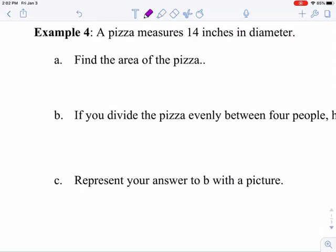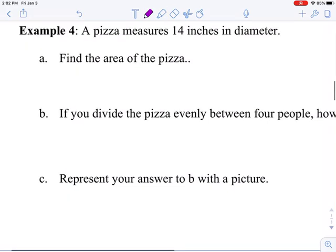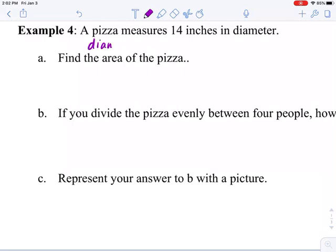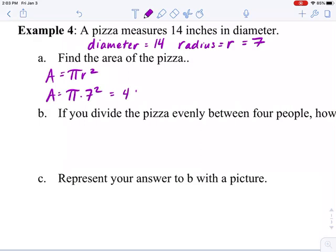Let's try example 4. A pizza measures 14 inches in diameter. Find the area of the pizza. Well, first of all, if the diameter is 14, that means the radius is half of that, which is 7. So to find area, again I'll use pi r squared, pi times 7 squared. You could just write this as 49 pi, or if you'd like an actual value, you would take 49 times 3.14, and you will get 153.9 square inches.